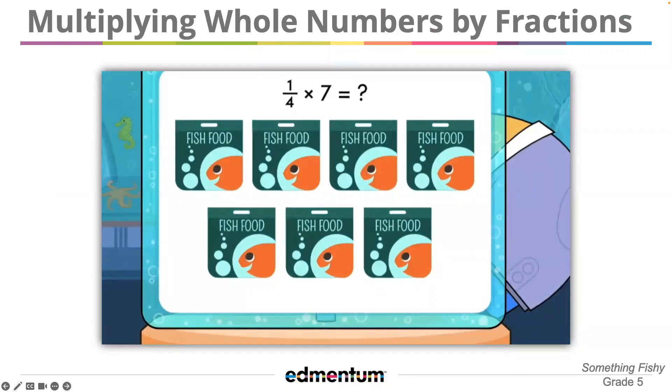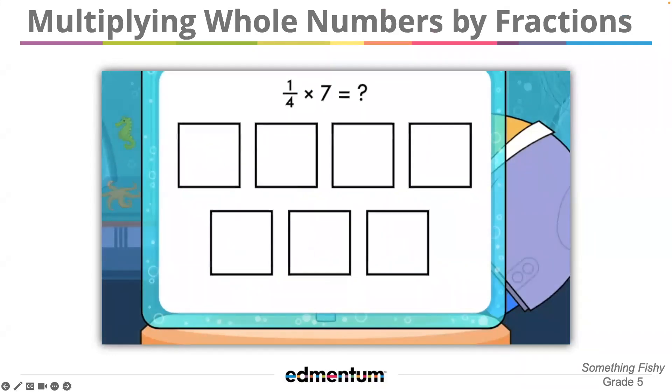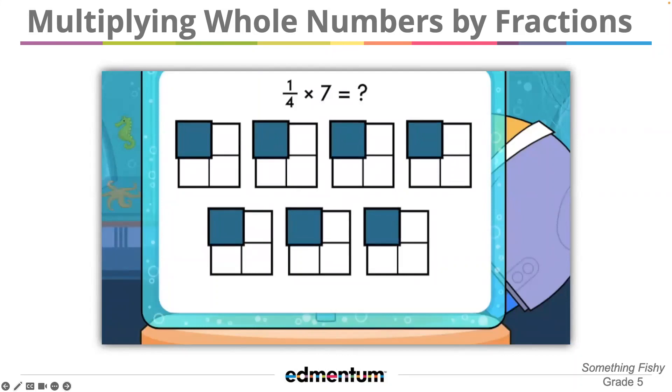We can use seven squares to represent the seven bags of fish food. We need to feed the fish one-fourth of the bags, so let's split each square into fourths. That's it! Then, we shade one-fourth of each square. This model shows one-fourth times seven.